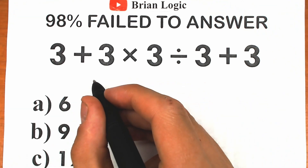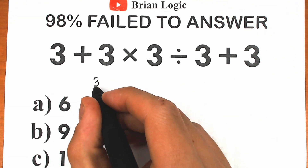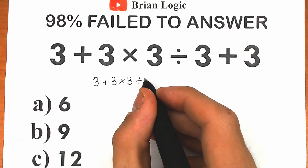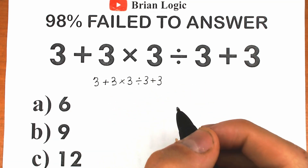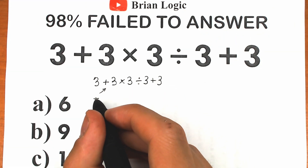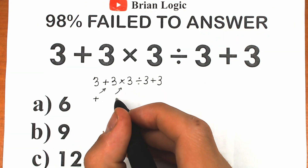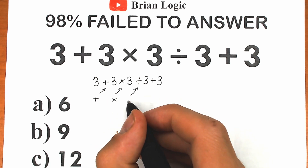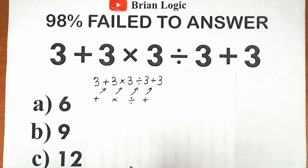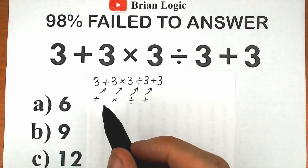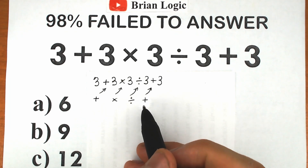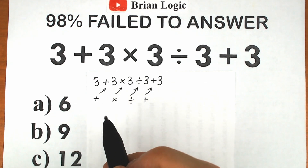First of all, let's rewrite our challenge. What do we have right here? We have: 3 plus 3 times 3 divided by 3 plus 3. Here's our question. A lot of students might say, right here we have addition, right here we have multiplication, right here we have division, and right here we have addition. So as you can see we have four math operations, and students start solving in a very random method.